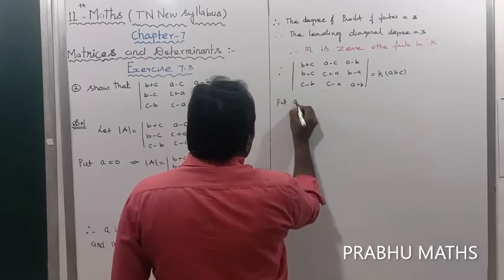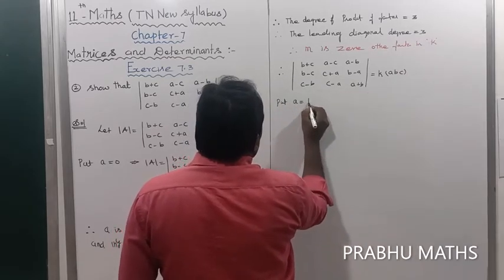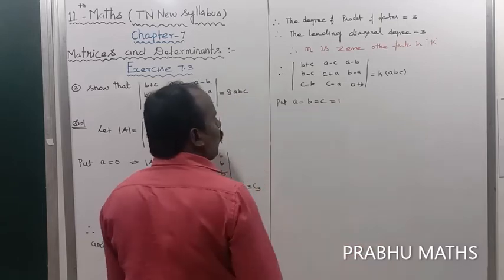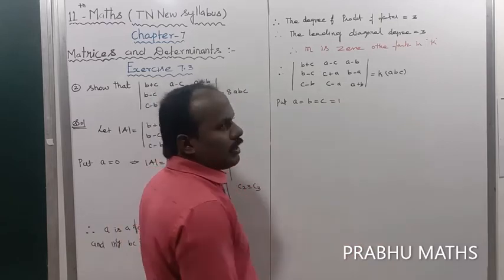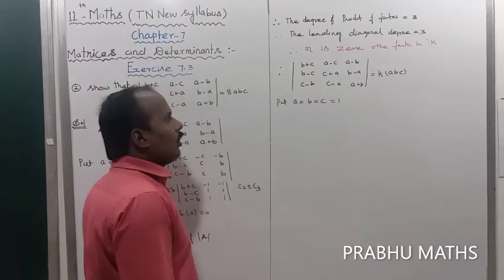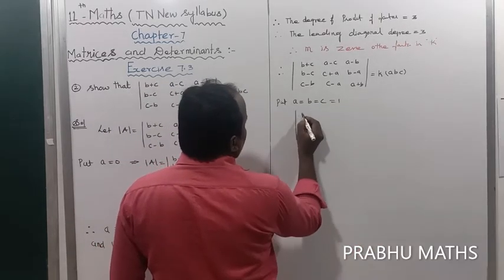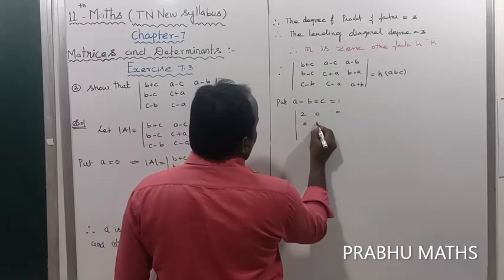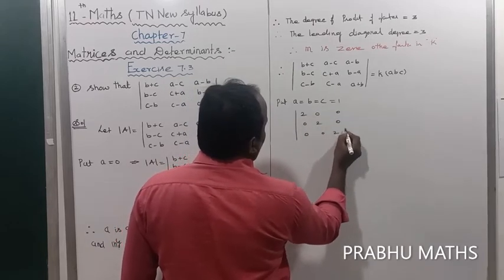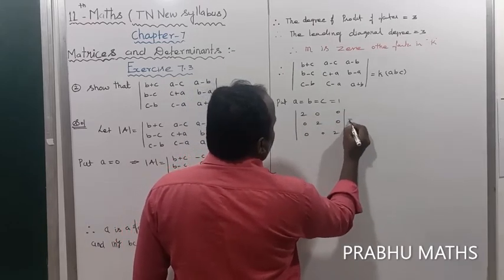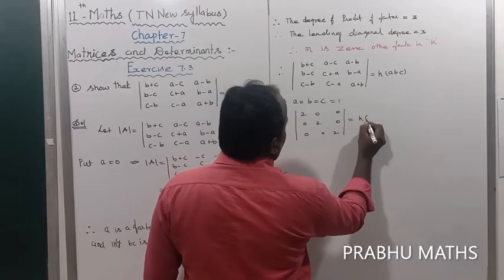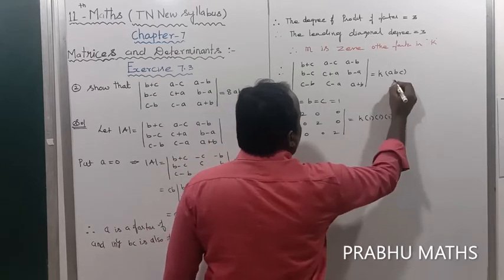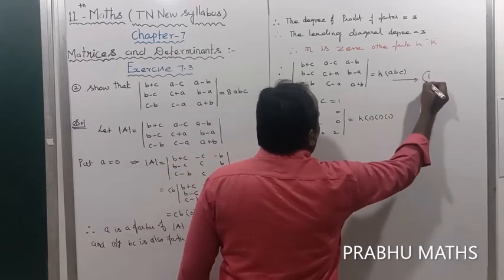Now put a equal to b equal to c equal to 1. We get the matrix with diagonal entries 2, 0, 0; 0, 2, 0; 0, 0, 2, which equals K times 1 times 1 times 1. This is equation number 1.